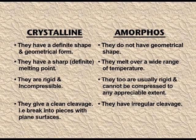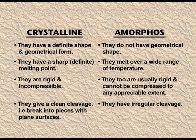Crystalline solids have a definite shape and geometrical form, whereas amorphous solids do not have a definite geometrical shape. The melting point of crystalline solids is very sharp, but amorphous solids do not have a sharp melting point — over a range of temperatures they get softened. Crystalline solids are rigid and incompressible, whereas amorphous solids can be compressed.